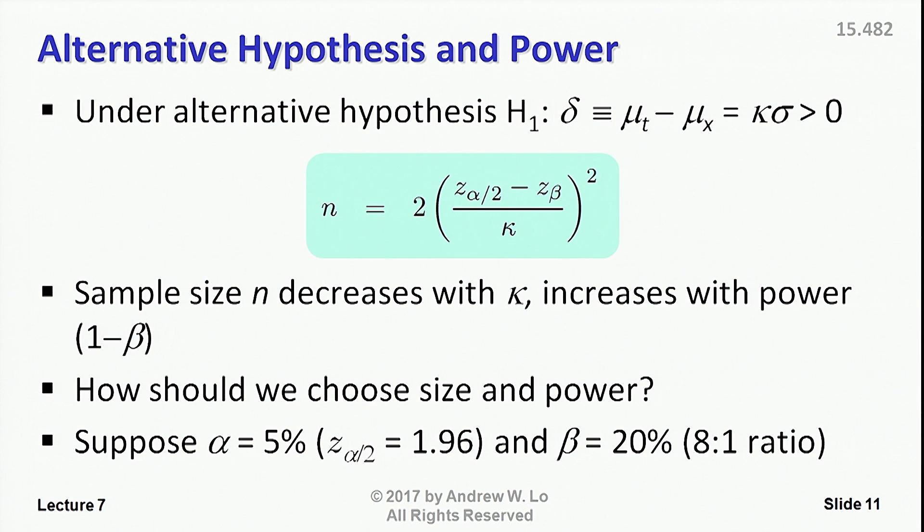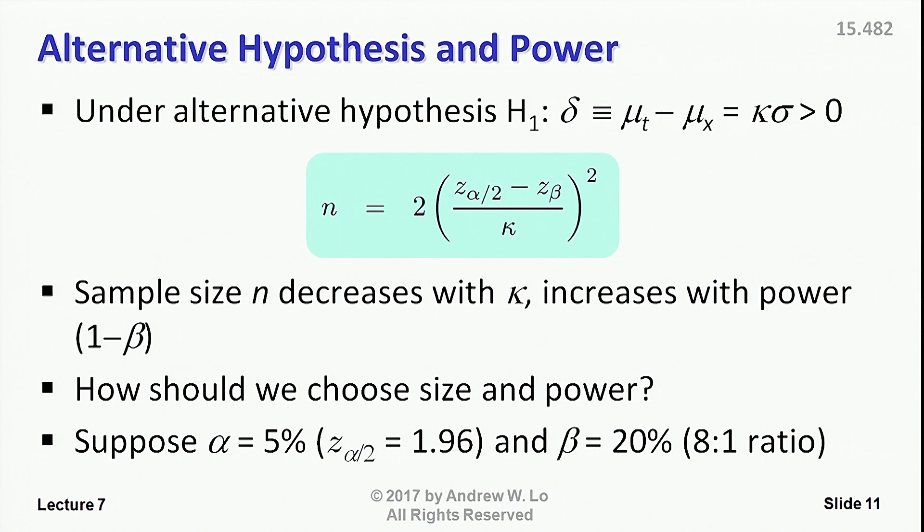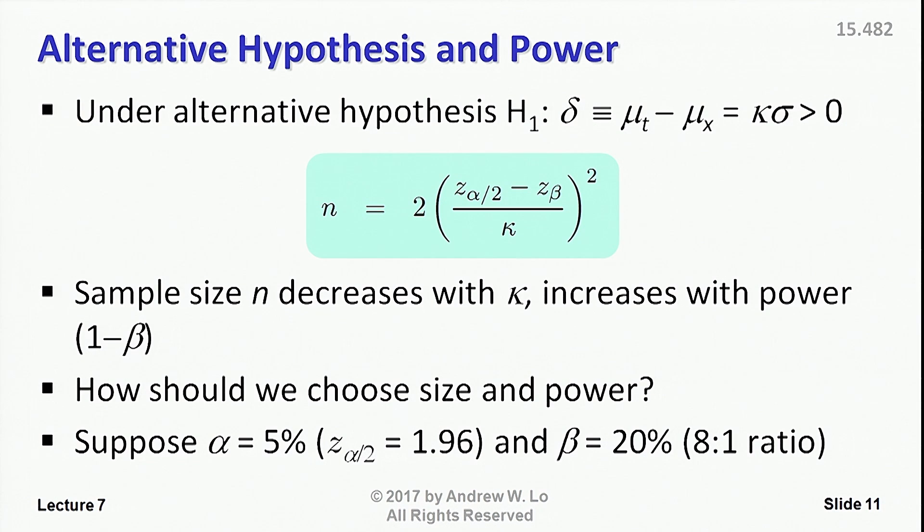So kappa is the alternative hypothesis. It tells you how many standard deviations away from 0 is the treatment effect that you are hypothesizing under the alternative. So kappa is the strength of your particular treatment. For larger kappa, it means that you're farther away from 0. That's a good thing. That means that you're getting a stronger treatment effect.